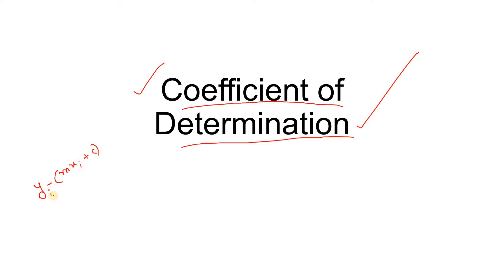If the residual is in a random fashion, we say our model is good. But if the residual is following certain behavior — like continuously increasing — then the model has a problem. However, if you have a very high value of residual, we cannot simply say the model is bad without a comparison. We need some standard against which we can compare, and that is where the coefficient of determination comes in.